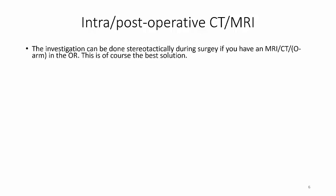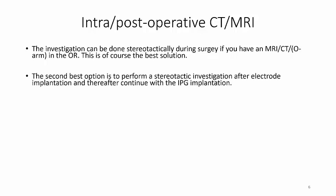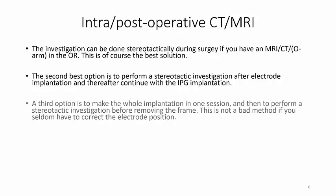CT and MRI can be used in various ways. The investigation can be done stereotactically during surgery if you have an MRI, CT or O-arm in the OR, and this is of course the best solution. The second best option is to perform a stereotactic investigation after electrode implantation and thereafter continue with the IPG implantation. A third option is to make the whole implantation in one session and then perform a stereotactic investigation before removing the frame. This is not a bad method if you seldom have to correct the electrode position.